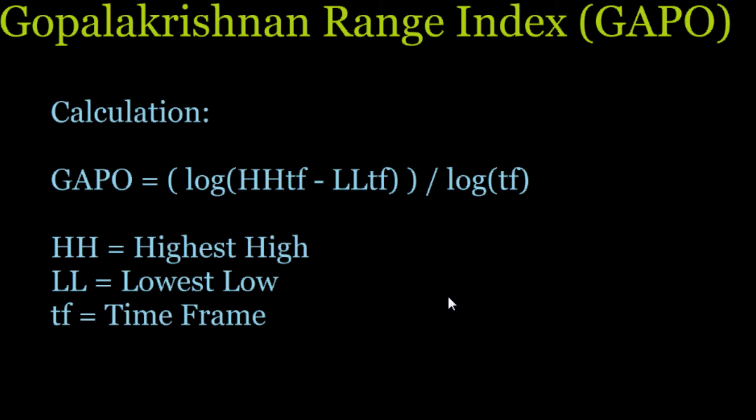The calculation for the GAPO indicator is basically going to be the logarithm of the highest high for whatever time frame you're considering, minus the lowest low for whatever time frame you're considering. Then you divide that by the logarithm of that time frame. So with that, let's look at an example of this GAPO indicator before we get into actually programming it.